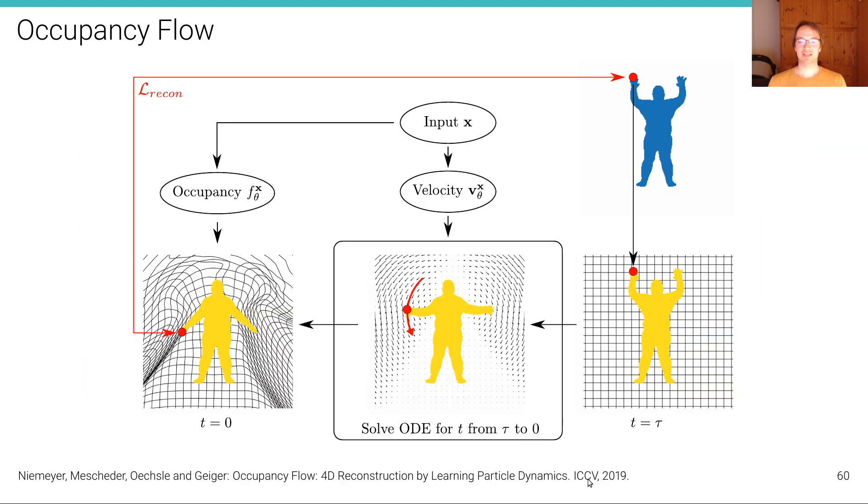This model can also be extended to 4D. We have proposed such extension in ICCV 2019. However, going from 3D to 4D directly is difficult because of the curse of dimensionality. So we developed a model that represents the occupancy, the shape, only at a particular time instance, but then represents a velocity field in 4D, which is much easier.